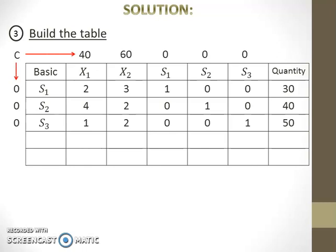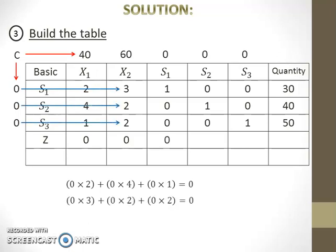The second last row is for the objective function value, namely z. Z is obtained by taking the summation of the multiplication of each value of c at the left side of the table with each corresponding constraint coefficient value in the body of the table.